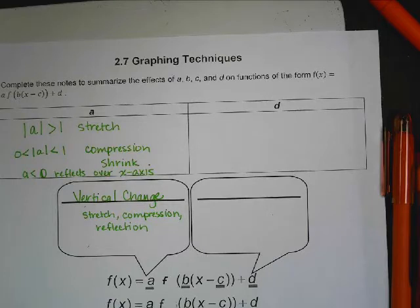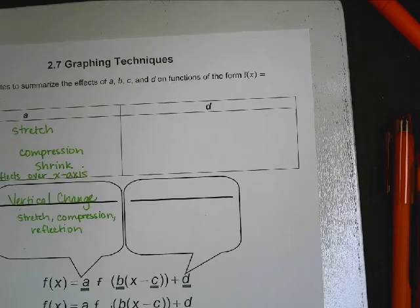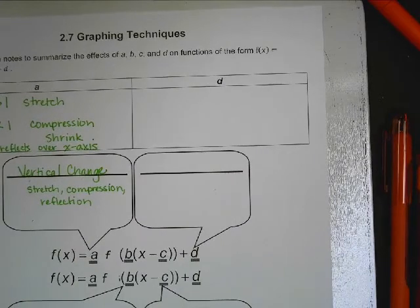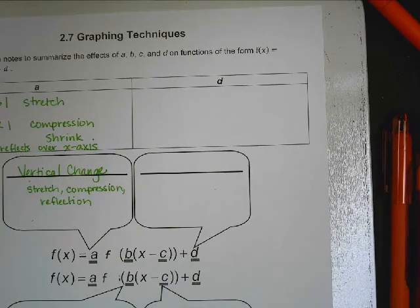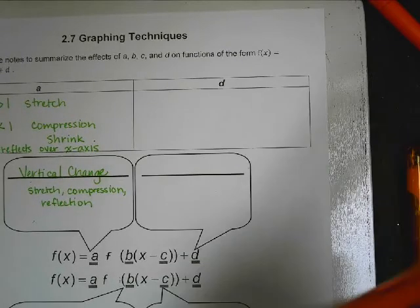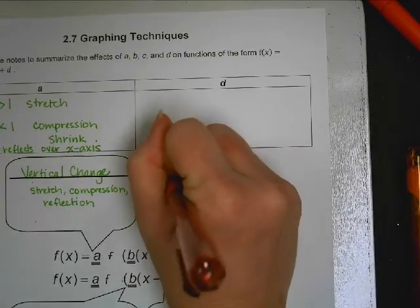So then let's talk about D because that's another vertical change. And vertical changes are good, they make sense. What does D do? Up or down. So D is also a vertical change.